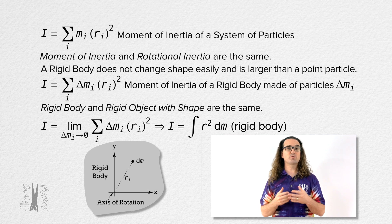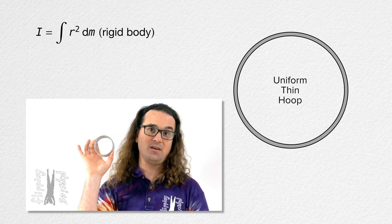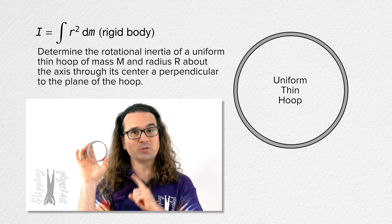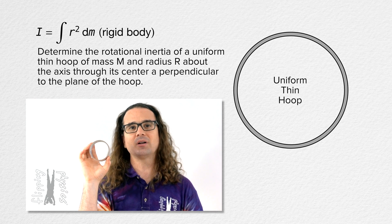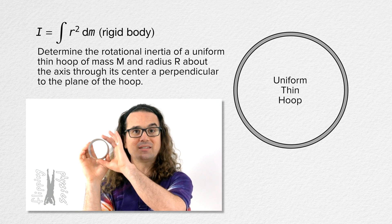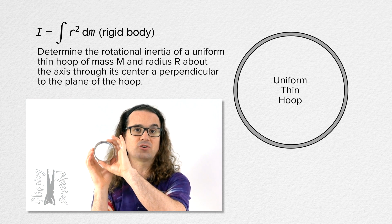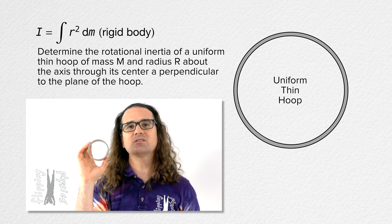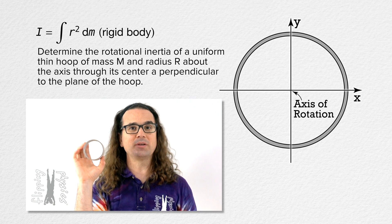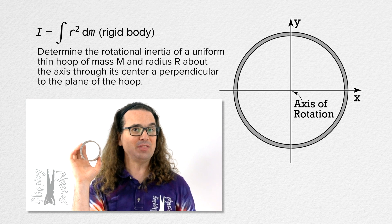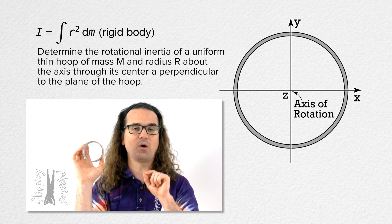Now let's actually determine the rotational inertia of an object. Let's start with a uniform thin hoop. We are going to determine the rotational inertia of this uniform thin hoop of mass capital M and radius capital R as it rotates around an axis which is perpendicular to the plane of the hoop and that axis goes through the center of the hoop. If we place the hoop in an xy plane with its center at the origin, the axis of rotation will be directly in the middle of the hoop at the origin and along the z-axis.